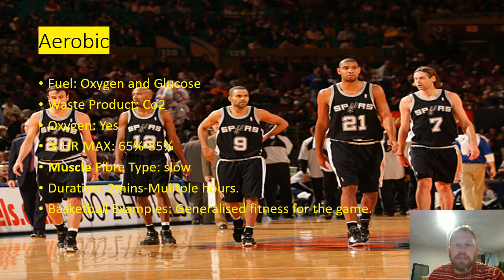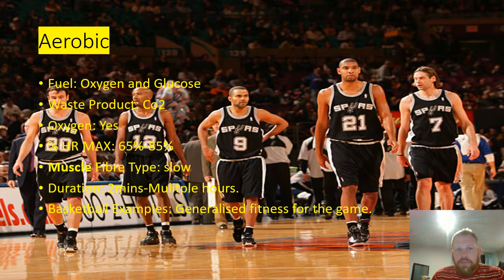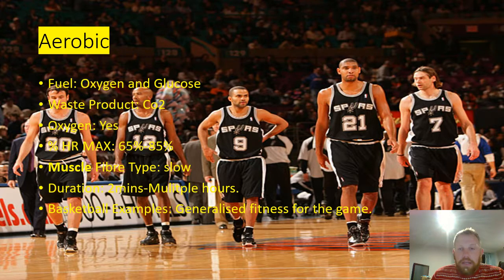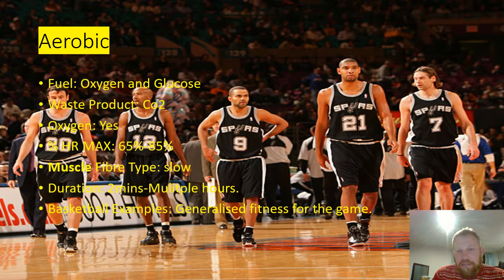The aerobic system is our general base system for most sports. The fuel is oxygen and glucose, and the waste product is CO2 — our body pumps oxygenated blood to the working muscles. The higher the intensity, the more oxygenated blood needs to be pumped. What's being breathed out is CO2. It works at 65 to 85% of VO2 max, and the muscle fiber type is slow twitch.